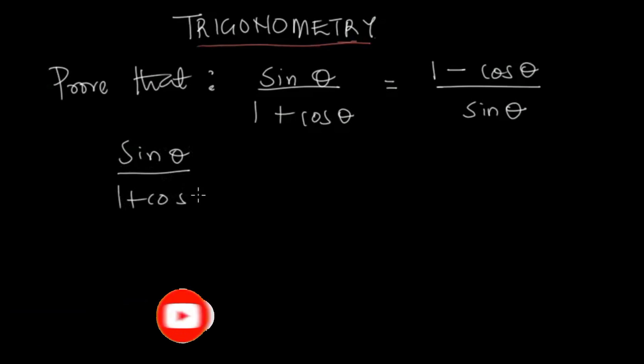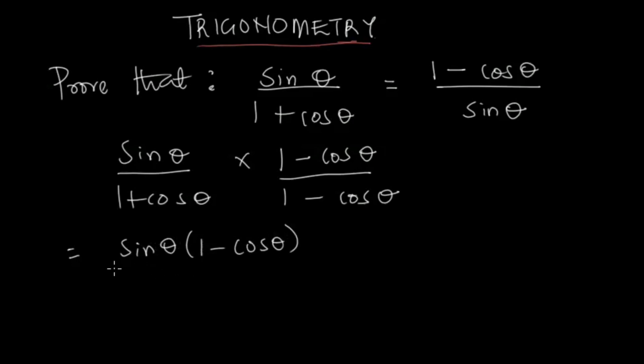The first step: multiply the numerator and the denominator by the conjugate of the denominator, which is 1 minus cos θ over 1 minus cos θ. So here we're gonna have sin θ multiplied by 1 minus cos θ over...